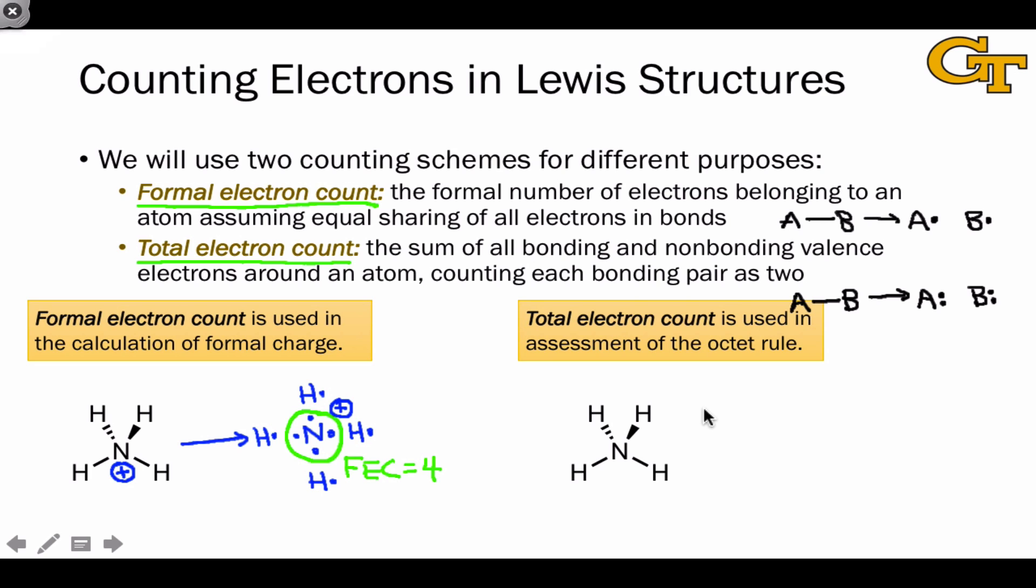The total electron count is used to assess the octet rule. In other words, it's used to evaluate whether the octet rule is satisfied on every atom within a structure. So in applying this analysis to ammonium, we're actually going to give two electrons to the central nitrogen atom per bond that it has, and look at the number of electrons around the nitrogen to determine the so-called total electron count, and we're going to do the same thing with the hydrogens, giving them two electrons per bond that they're involved in, so that each hydrogen is associated with two electrons now for the purposes of total electron count.